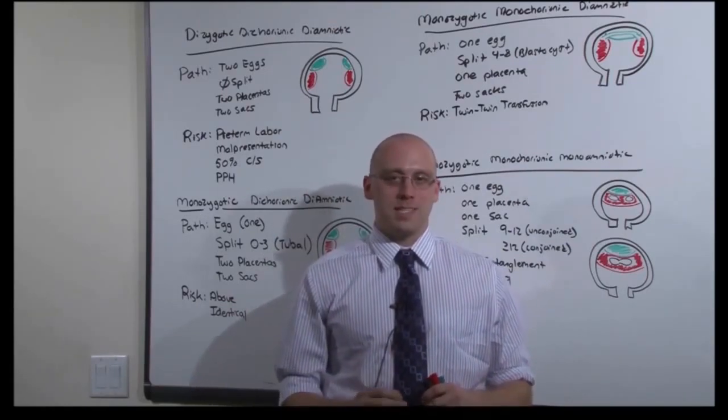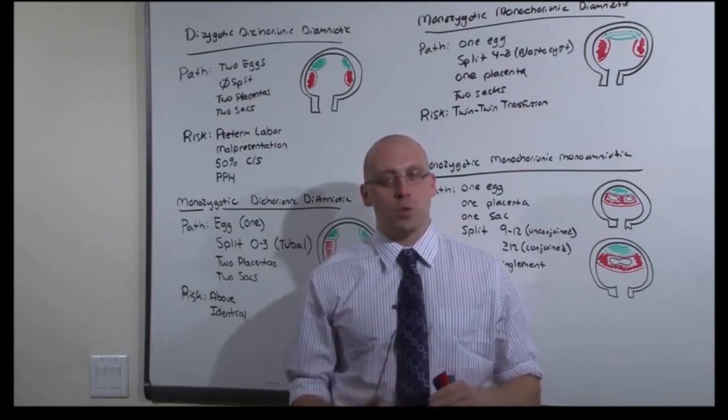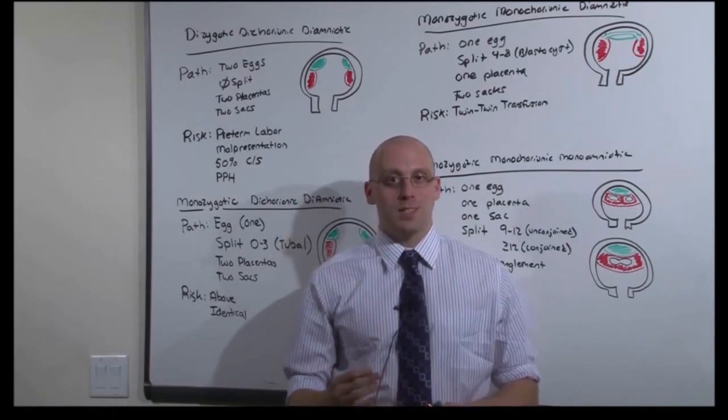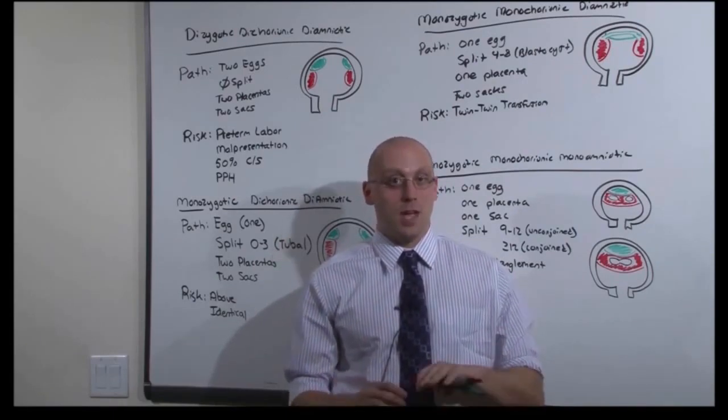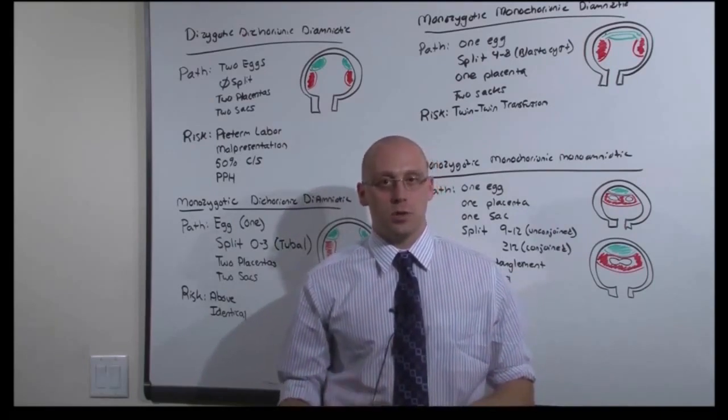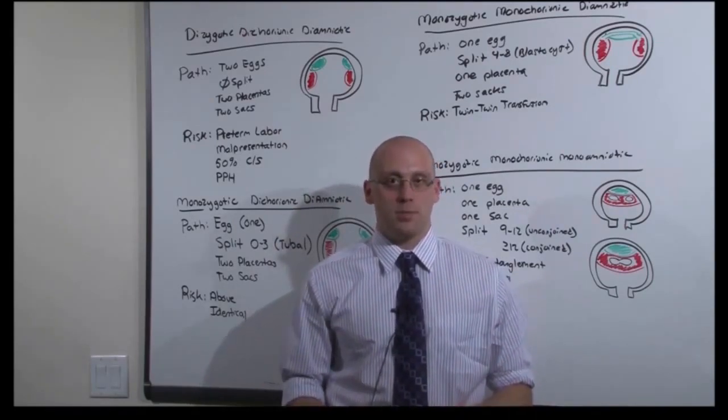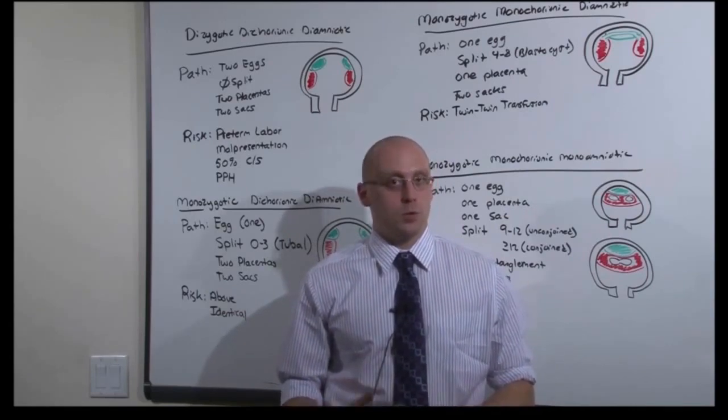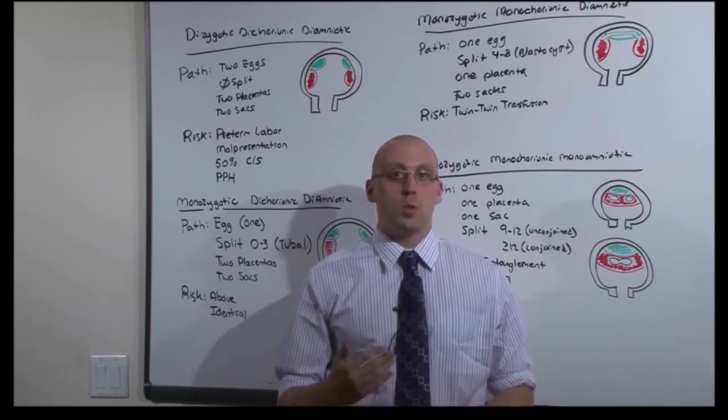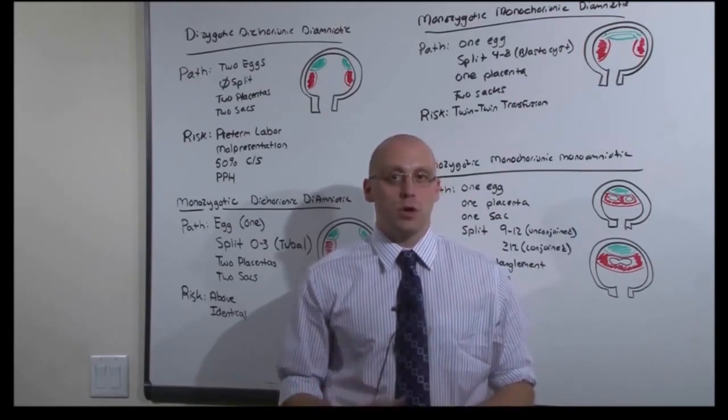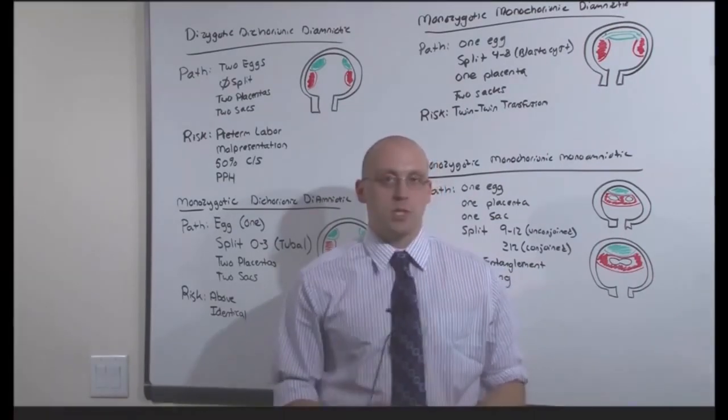And what we discussed in this lecture is the different types of twinning and the risk they confer. Hopefully, you now understand the difference between dizygotic, dichorionic, diamniotic, and their monoversions, as well as how you get identical and conjoined twins and the risk they carry. Recognize that you're going to easily diagnose this by ultrasound. What you have to do is prepare for the diseases that might occur as a result of twinning. That is multiple gestations.